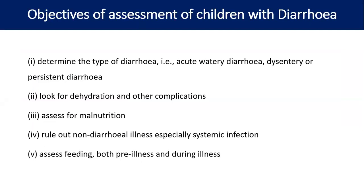For diarrhea in children, important things to remember: first determine the type of diarrhea — whether it is acute watery diarrhea, dysentery, or persistent diarrhea. Look for dehydration and other complications, and nutritional assessment is also important. Rule out non-diarrheal illnesses, especially systemic infection, as the patient can have sepsis presenting with diarrhea. Assess feeding both before and during the illness and note any change in food habits.